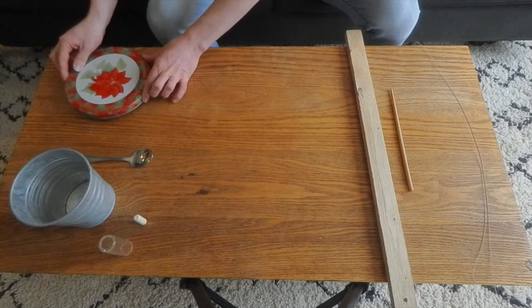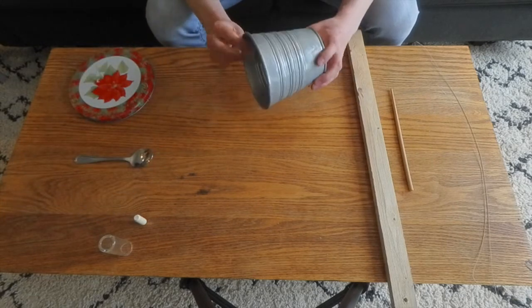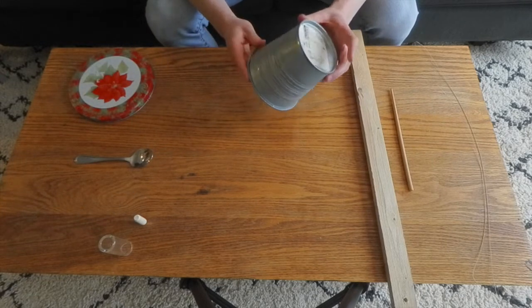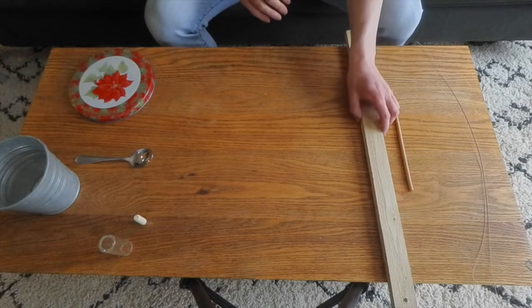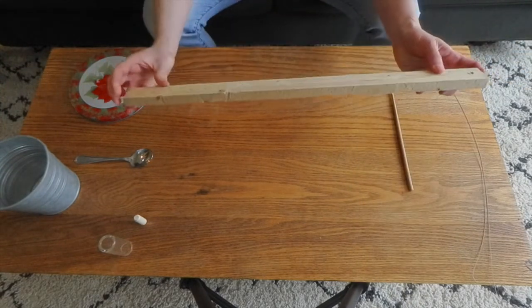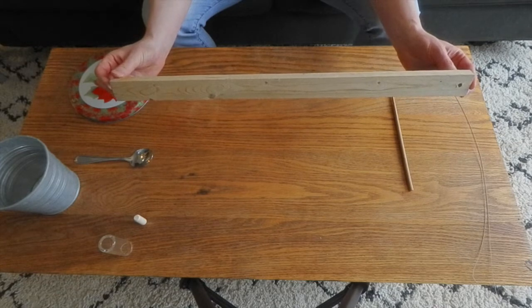An alternate resonator is a planter from IKEA. What I'm going to use for the neck of my instrument is a piece of one-by-two that I found down in the basement.